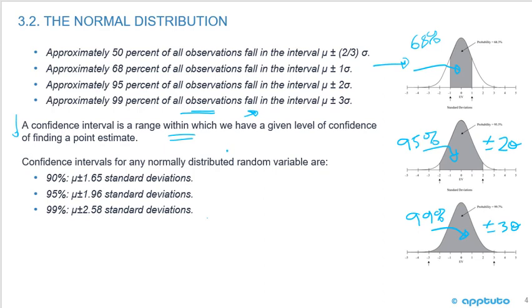Later, we're going to talk about confidence intervals. And that's a range within which we have a given level of confidence of finding a point estimate. So again, if the distribution is normal, and we have a mean here...